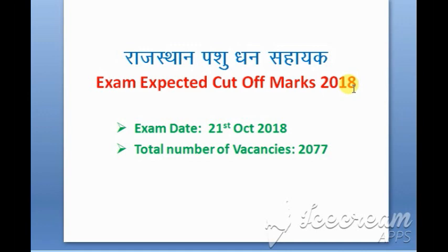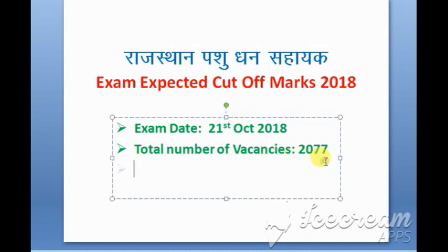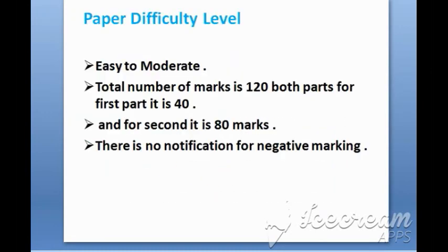This paper was published in October 2018. It was a vacancy of 2077, as you can see. This paper is simple and moderate in difficulty. It was a total of 120 marks — the first part was 40 marks and the second part was 80 marks.